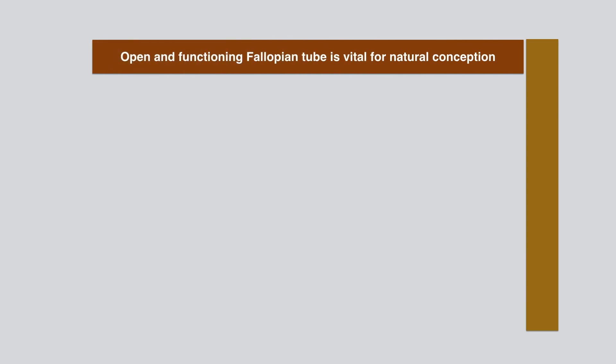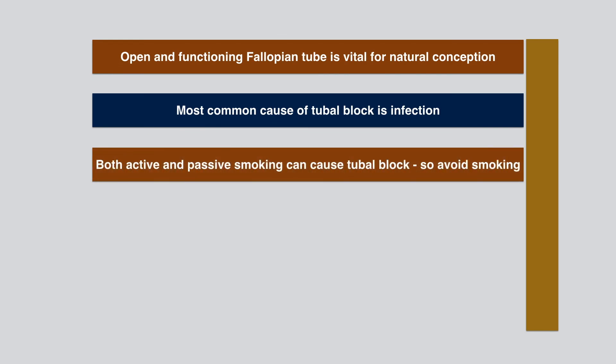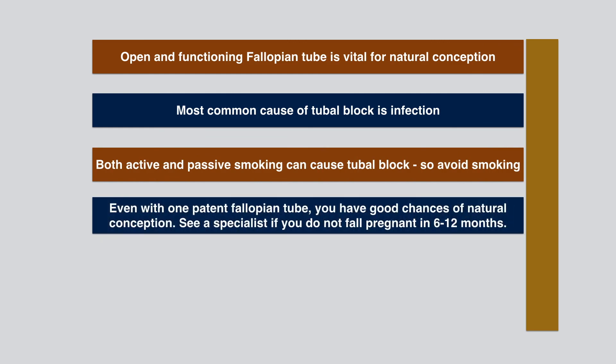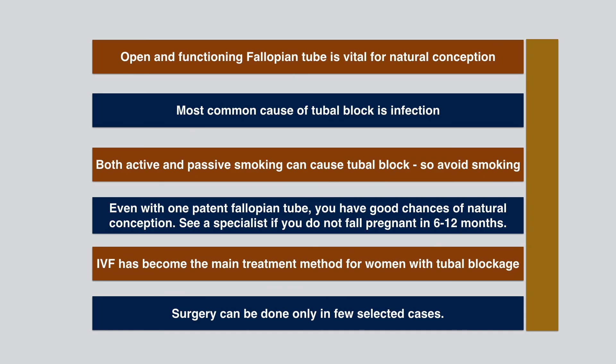To summarize: An open and functioning fallopian tube is vital for natural conception. The most common cause of tubal block is infection. Both active and passive smoking can cause tubal block, so avoid smoking. Even with one patent fallopian tube, you have good chances of natural conception, but see a specialist if you do not fall pregnant in 6 to 12 months. IVF has become the main treatment method for women with tubal blockage. Surgery can be done only in a few selected cases. Thank you for listening — I hope the information was useful. If you have any questions about tubal blockage, please put them in the comment box.